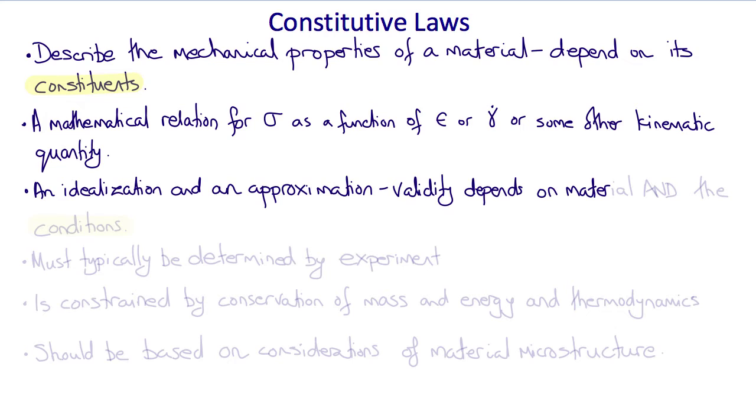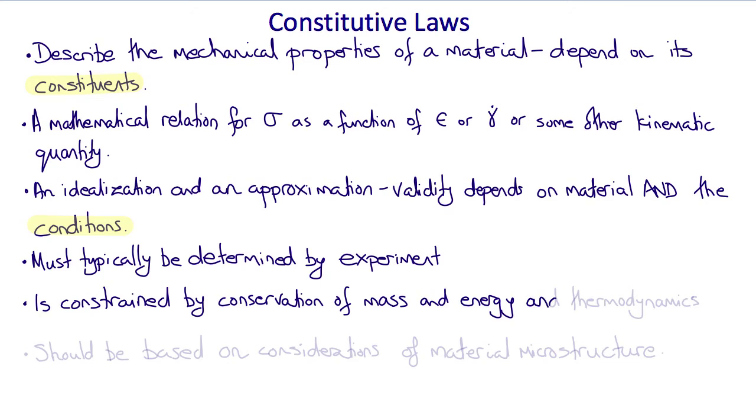For example, under working loads, a material might be well approximated by one constitutive law, but under loads that would cause it to fail, a different law would be needed. The constitutive law must typically be determined by experiment. Its form and parameters are constrained by conservation of mass and energy and thermodynamic considerations. And the choice of the form of the constitutive law should ideally be based on considerations of the microstructure of the material.